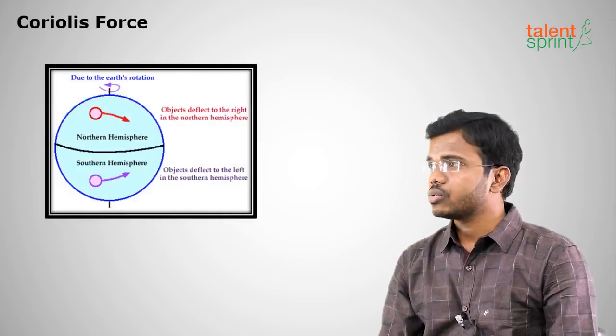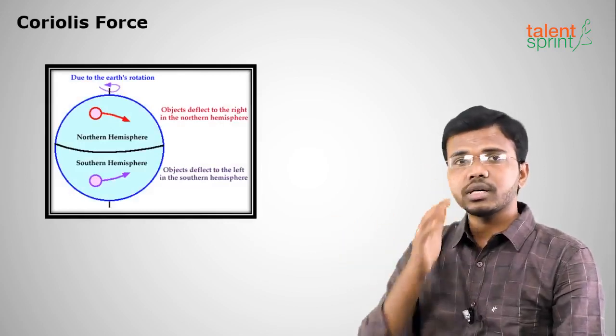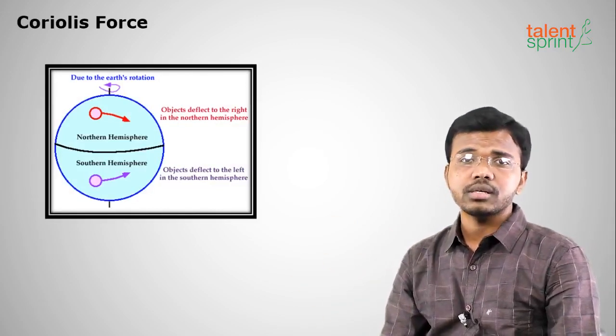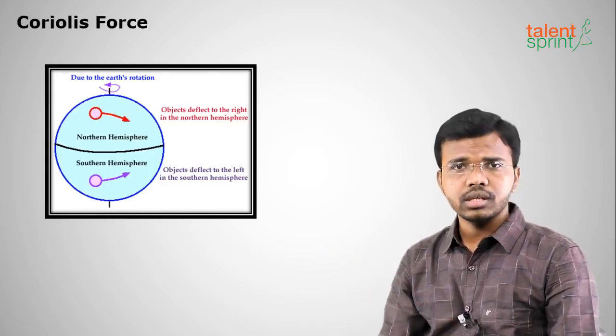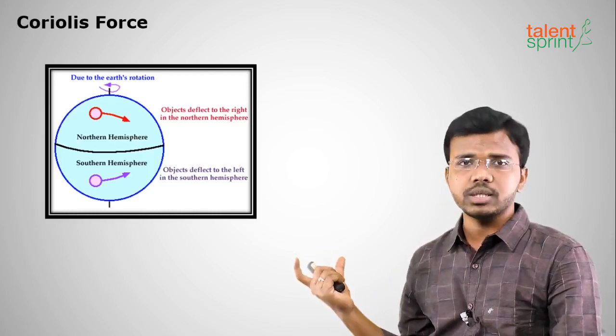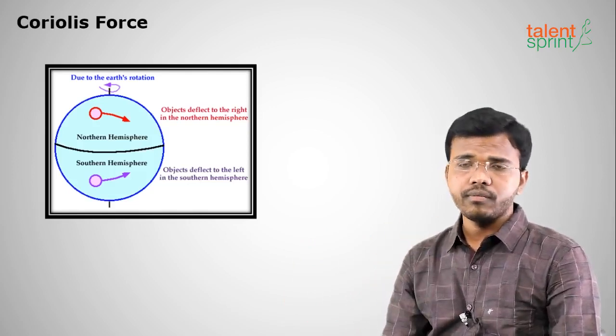The Coriolis effect is zero at the equator and highest at the poles. In the northern hemisphere the wind will be deflected towards the right, and in the southern hemisphere the wind will be deflected towards the left. The Coriolis force is caused by the rotation of the Earth from west to east, and it particularly deflects winds.